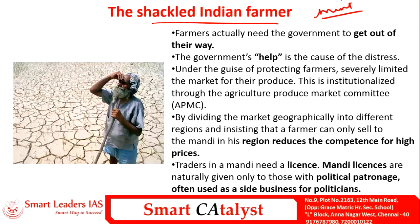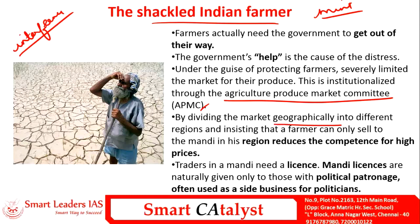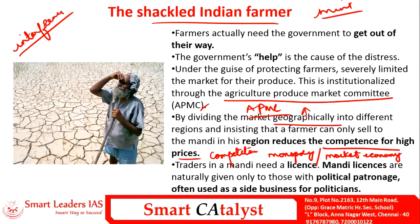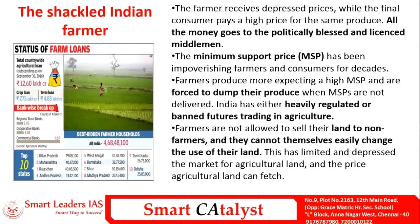There has been increased governmental interference in agriculture. The first and major interference is through the Agriculture Produce Market Committee (APMC). Under the APMC Act, the country is divided into geographical units acting as individual markets, and a farmer can sell goods only to that particular APMC mandi. This reduces competition for higher prices. Monopoly of any kind, be it state or private, does not augur well in a market economy. This APMC monopoly has led to the re-emergence of license rights and breeding of political patronage.